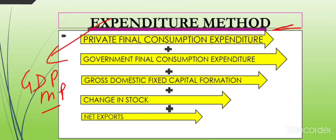GDPMP stands for Gross Domestic Product at Market Price. This means we calculate the market value, in the form of expenditure, of all the final goods and services created in our domestic territory. The first step is to calculate GDPMP, and to do so you need to add five things.